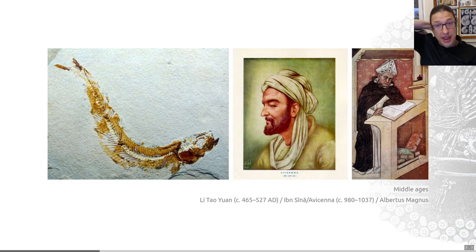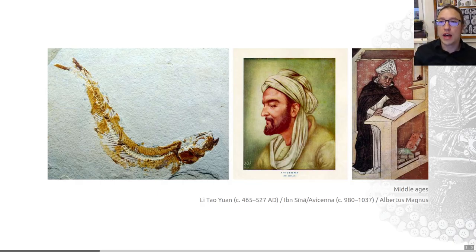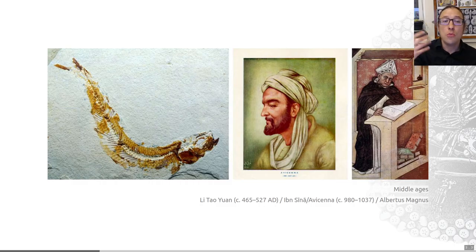The next person to really think about the origins of fossils was a Persian polymath who, in his Anglicised name, we call Avicenna. In the Book of Healing, which dates back to 1027, he suggested that fossils may result from the action of petrifying fluids — fluids that may move through a rock and replace structures already there. This idea was picked up by some figures in Europe.